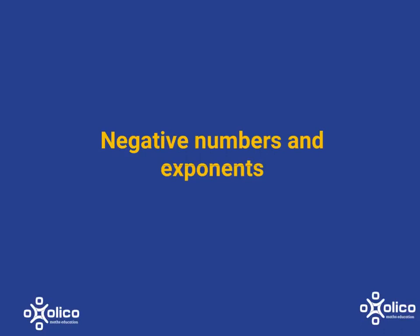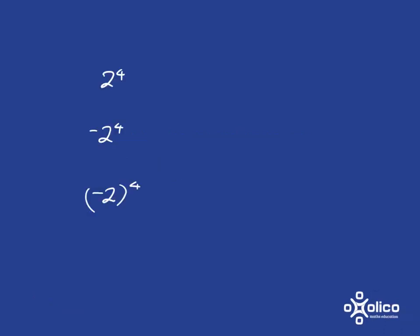Let's have a look at how negative numbers work when you raise them to a power. Let's look at these three numbers. We're going to use our basic idea of exponents, which is: if in doubt, write it out. We're simply going to write out what they mean in order to help us work out what they're equal to. So two to the power of four — we know that is just four twos all multiplied together, and that is 16.